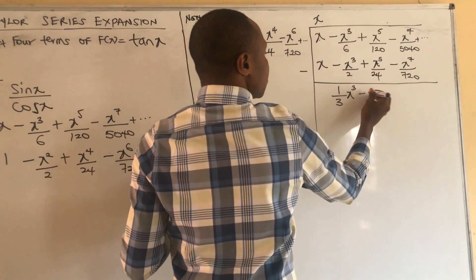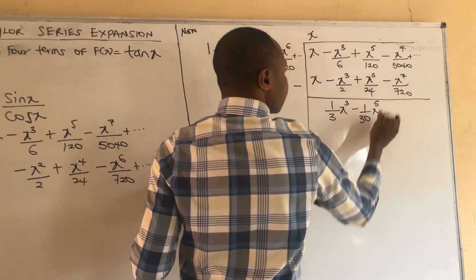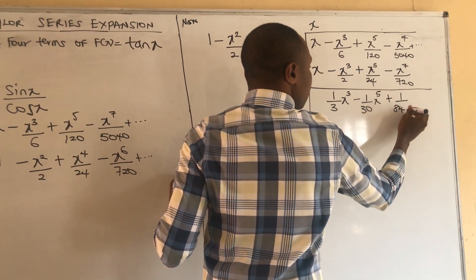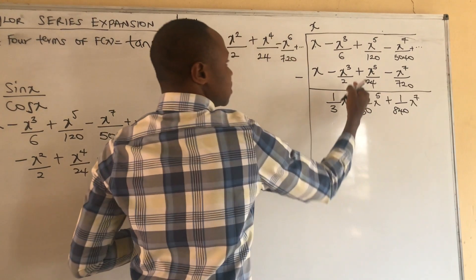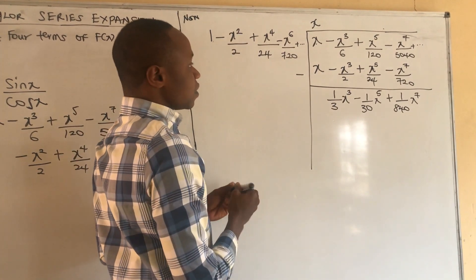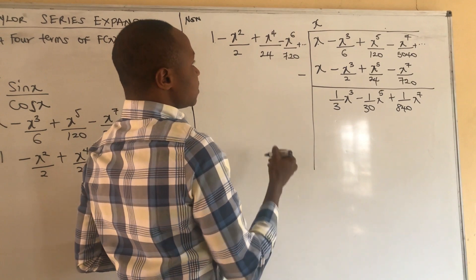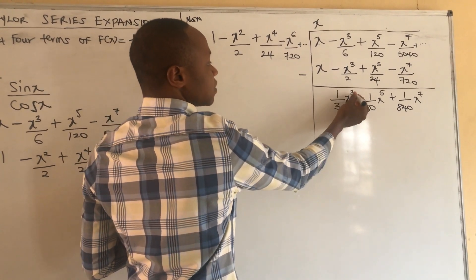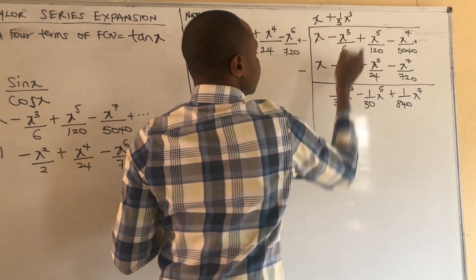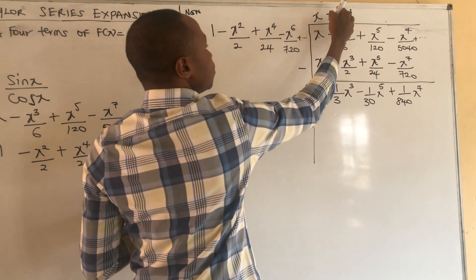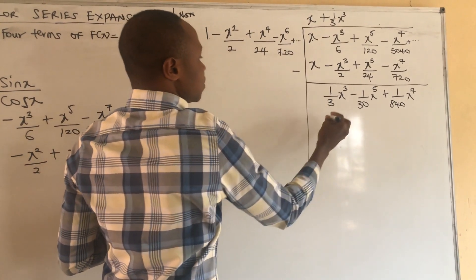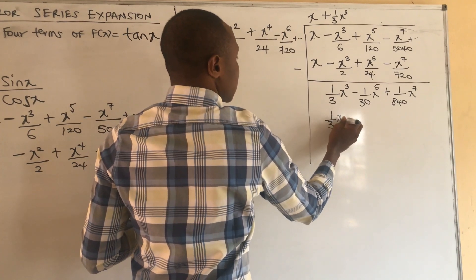Working on the next terms, we have −(1/30)x⁵ and +(1/840)x⁷ in the remainder from that subtraction. We proceed: use 1 to divide (1/3)x³, giving (1/3)x³ as the next quotient term. Multiplying (1/3)x³ by the divisor terms gives (1/3)x³, and this multiplied gives −(1/6)x⁵.